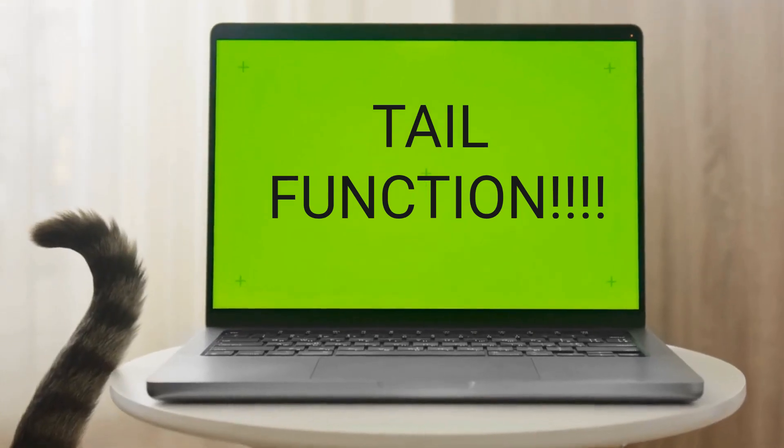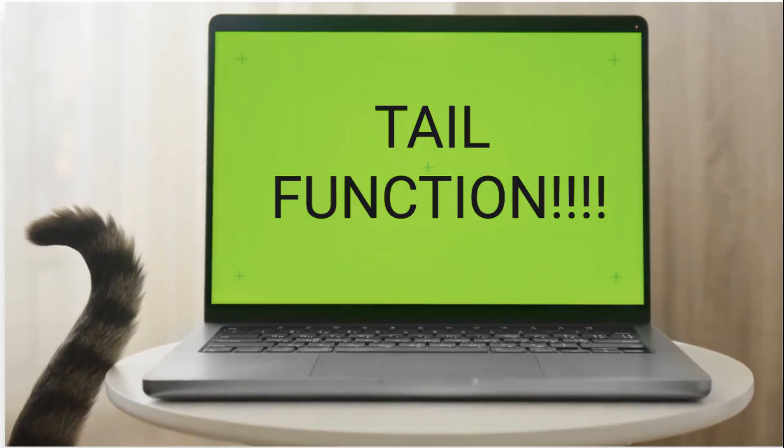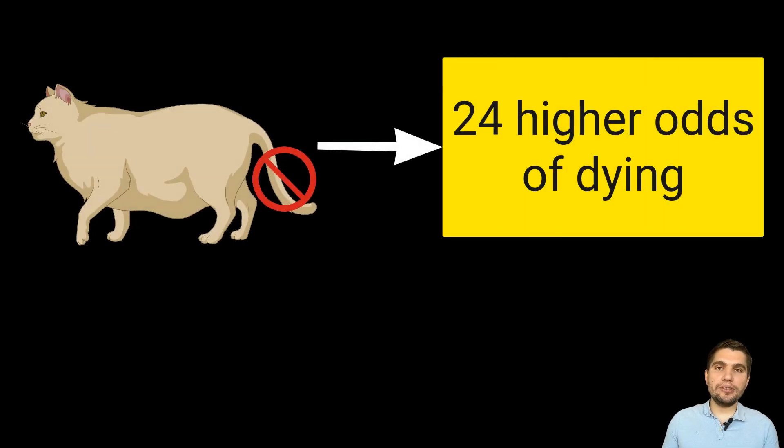The strongest survival predictor in this study was tail function. Cats without tail sensation, tone, or motor function had 24 times higher odds of dying compared to cats with normal or only mild tail abnormalities.